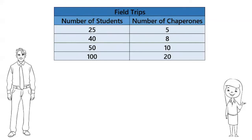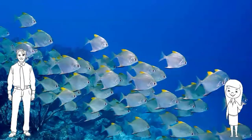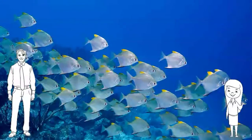So would you say that the rule would be to divide the number of students by 5 to find the number of chaperones needed? That sounds right. Can we go to the aquarium for our next field trip? I'm sure that could be arranged, but only if you can help me calculate how many chaperones we'll need.